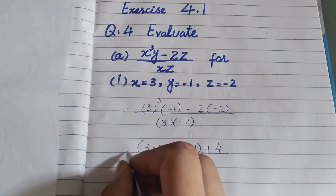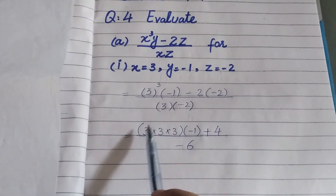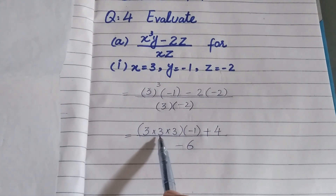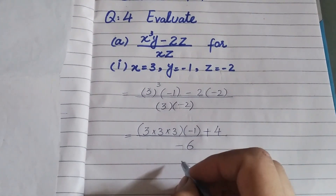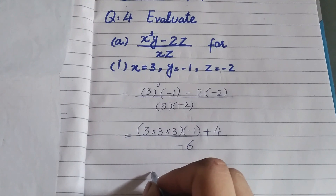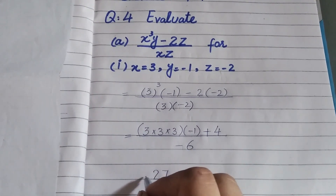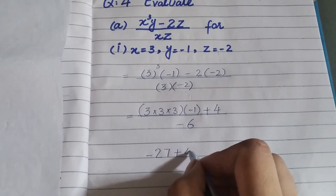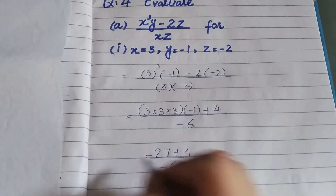So we get minus 6 in the denominator. In the numerator we have minus 27 plus 4, over minus 6.